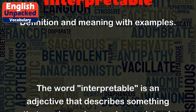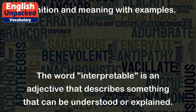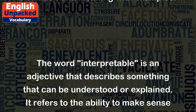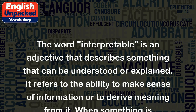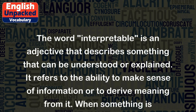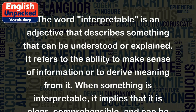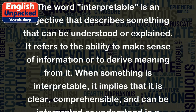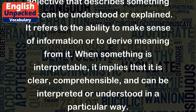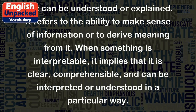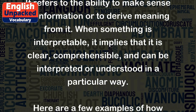The word interpretable is an adjective that describes something that can be understood or explained. It refers to the ability to make sense of information or to derive meaning from it. When something is interpretable, it implies that it is clear, comprehensible, and can be interpreted or understood in a particular way.